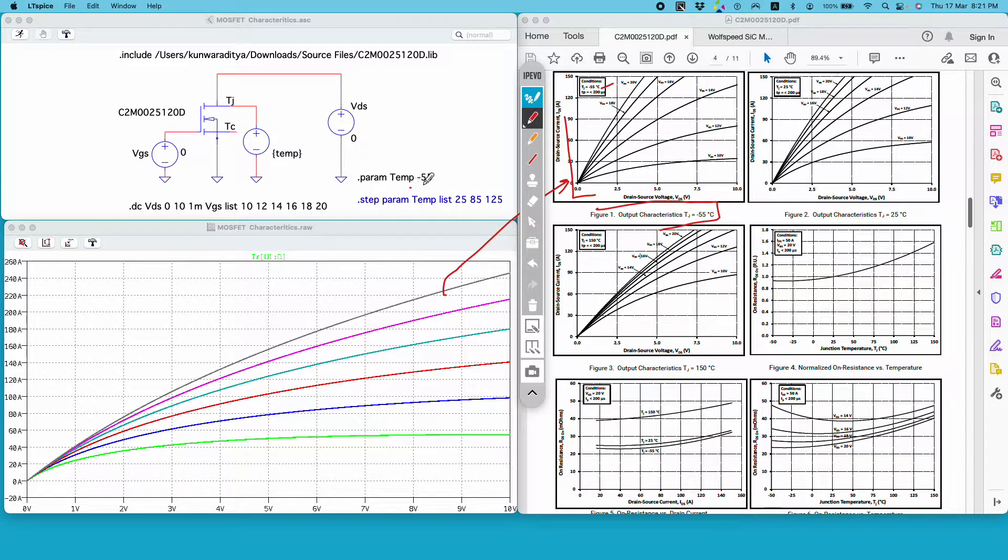But ideally you will not have access to junction temperature. Ideally you will apply a voltage or temperature at the case and you will estimate the junction temperature using some algorithm or some kind of measuring technique.